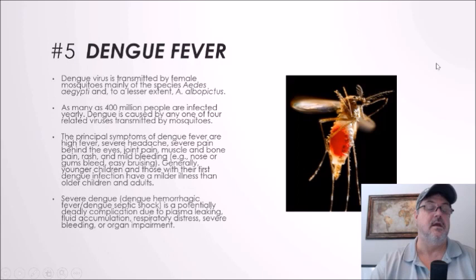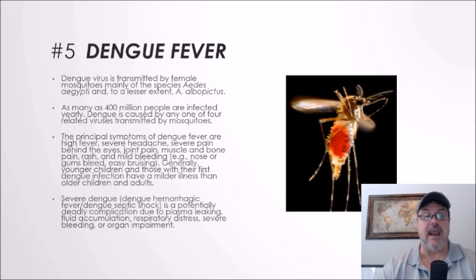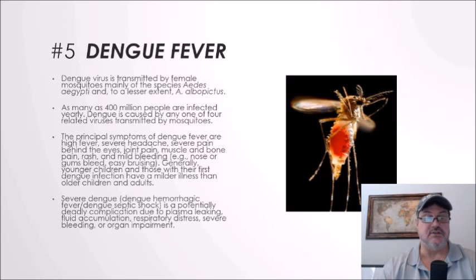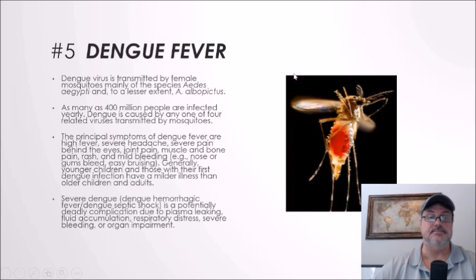Number five: dengue fever. The dengue virus is transmitted by female mosquitoes, mainly Aedes aegypti and to a lesser extent Aedes albopictus. As many as 400 million people are infected yearly. Dengue is caused by any one of four related viruses. Principal symptoms include high fever, severe headache, severe pain behind the eyes, joint pain, muscle and bone pain, rash, and mild bleeding. Severe dengue — like dengue hemorrhagic fever or dengue shock syndrome — is a potentially deadly complication due to plasma leaking, fluid accumulation, respiratory distress, severe bleeding, or organ impairment.